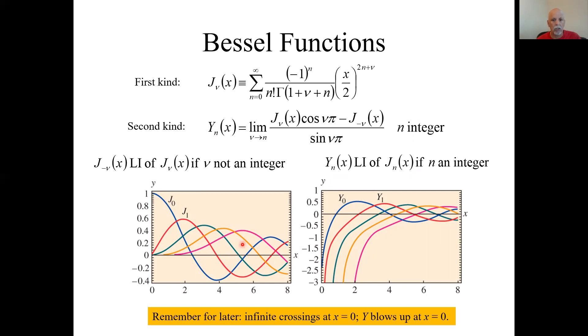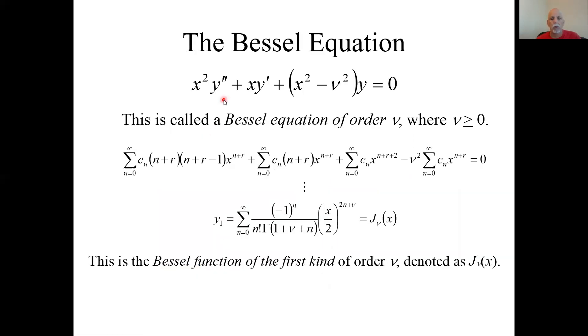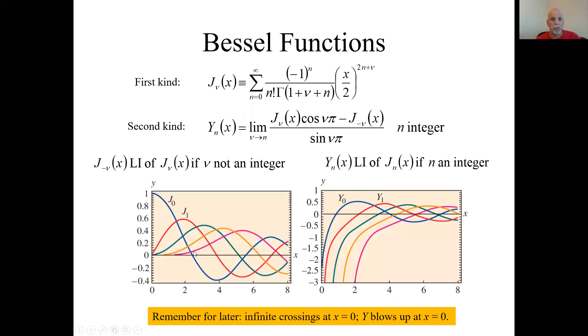These are what they look like, at least for the integers. By the way, from this original equation, we should have known that the only singular point is zero, so the interval of convergence is from zero to infinity. And you see these solutions start at zero, go all the way out to infinity. They each cross the x-axis an infinite number of times. That will be important later on in the course.